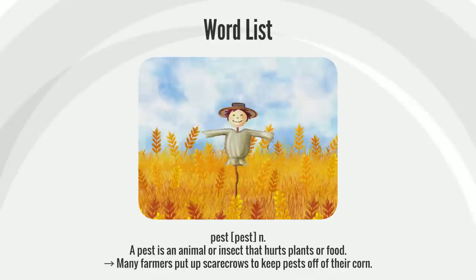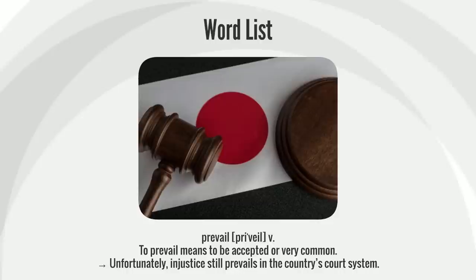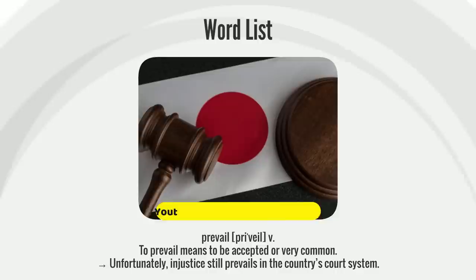A pest is an animal or insect that hurts plants or food. Many farmers put up scarecrows to keep pests off of their corn.